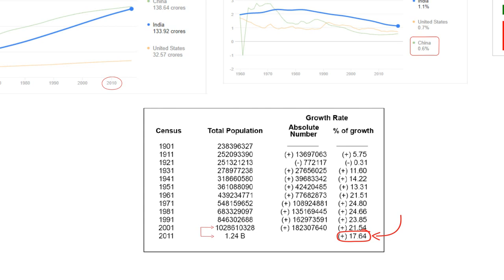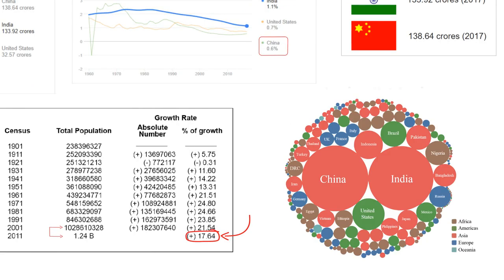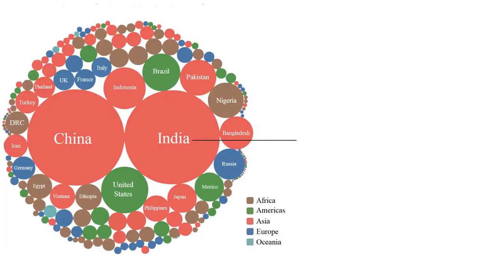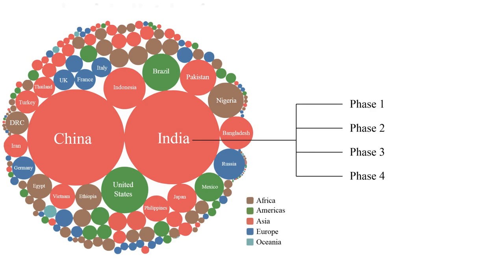I'll tell you the reason behind it in a much more comprehensive manner. To understand the population growth of India, it has been divided into 4 different phases. I'll explain each and every phase so that you have a clear idea about the demographic history of India.